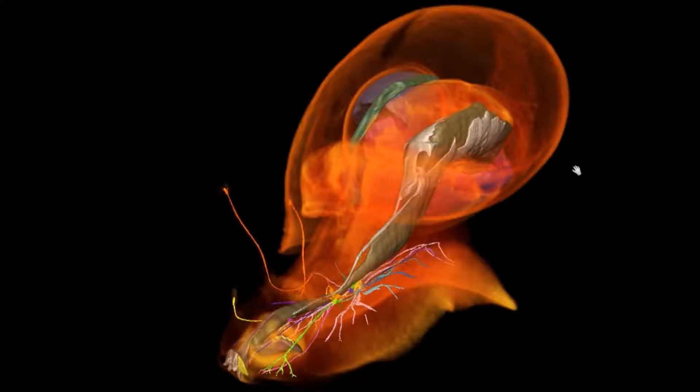Their esophagus, which is just like ours going from their mouth back to their stomach, goes directly through the middle of their brain. Their brain, unlike ours, is composed of three pairs or sets of ganglia, which are basically just balls of nerves.